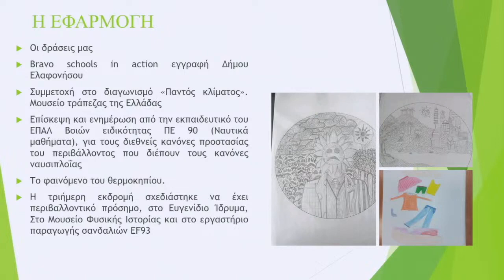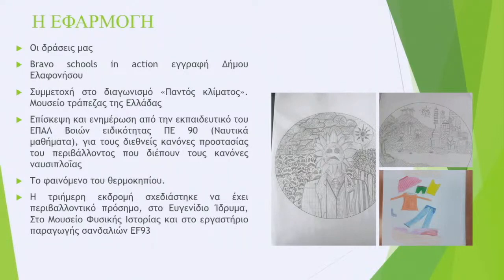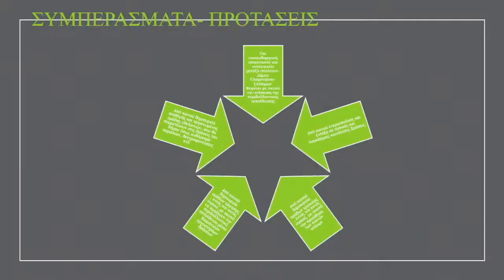We also organized other actions: we convinced the municipality to participate in Bravo Schools in Action, and we participated in the competition called Pantos Climatos, talking about the climate. You can also see artworks by the children commenting on overconsumption — one picture shows clothing items, with the message that even if they are cheap, we buy only what we need to save the environment. We discussed the greenhouse effect at length, kids conducted research on that issue, and during our three-day visit to Athens we visited the Avianidio Foundation, the Natural History Museum, and a shoemaking business.